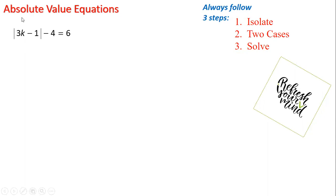Why is it an equation? It's an equation because it has two sides. This is side one: absolute value of 3k minus one minus four is on side one, and six is on side two. And in between we have an equal. So to solve this equation with absolute value, we should follow these three steps: number one, we should isolate; number two, we take two cases; and number three, we solve each case.